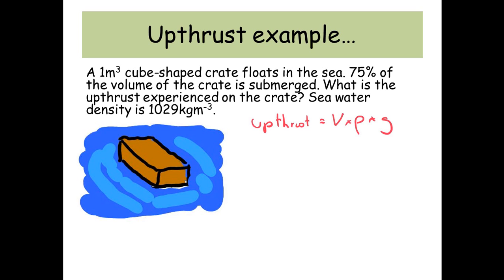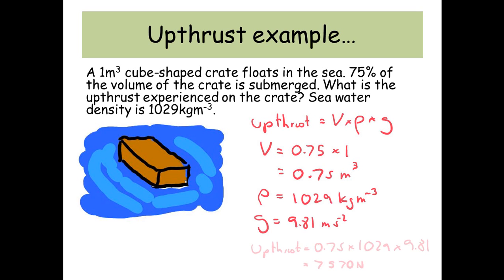Up thrust is equal to the volume times the density times gravitational acceleration. Now the volume of the cube submerged is just 75% of one metres cubed. So 0.75 times by one, which is 0.75 metres cubed. The density of the seawater is 1029 kilograms per metres cubed. It's on planet Earth so G is 9.81. So the up thrust is going to be 0.75 times 1029 times 9.81, which gives us a value of 7570 Newtons.